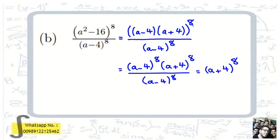So (a minus 4) times (a plus 4), all to the power of 8, equals (a minus 4) to the 8th times (a plus 4) to the 8th, all over (a minus 4) to the 8th. We cancel (a minus 4) to the 8th from numerator and denominator, and we reach (a plus 4) to the 8th. That's the simplest form.